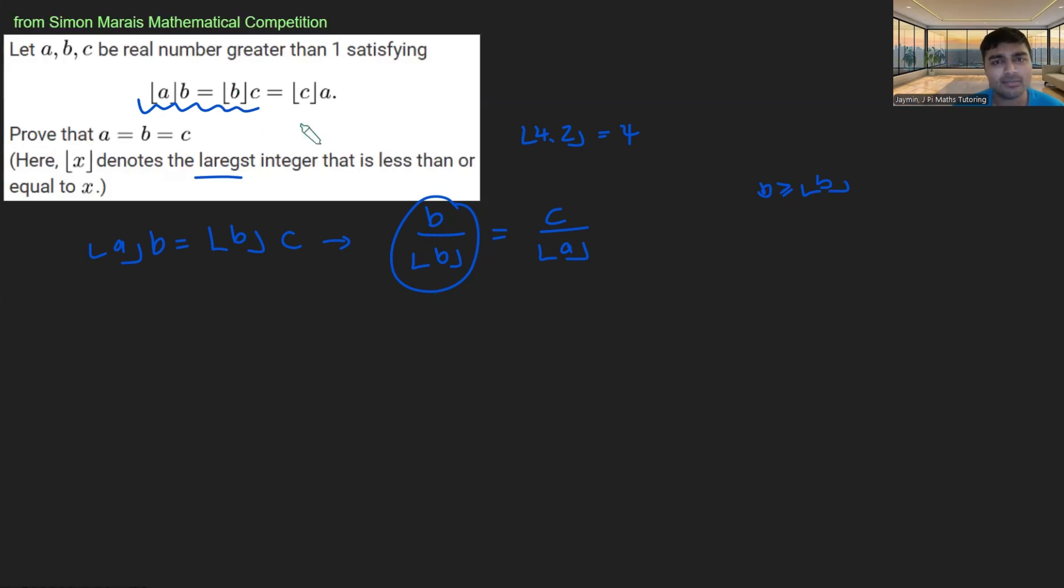But in particular, since B is bigger than one, I know that floor of B is going to be at least one as well. And so if I use that and just divide both sides here by floor of B, I get B over floor of B is at least one.